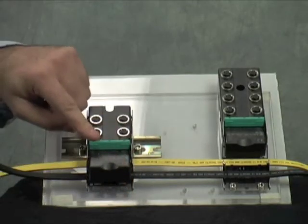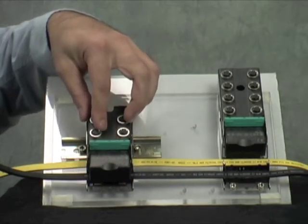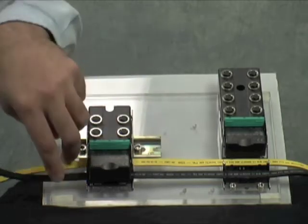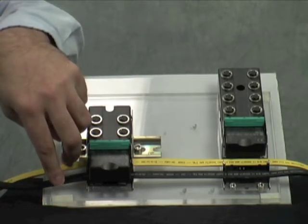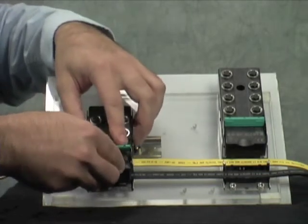When you pull the lever, this is going to do two things. It will lock the top of the module in place, but also pierce the yellow and black flat cable, giving you the power you need to run the module.